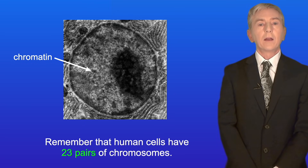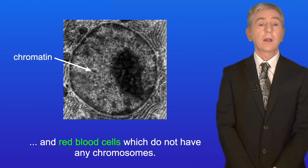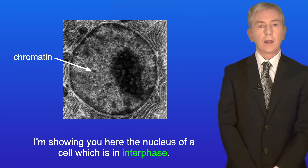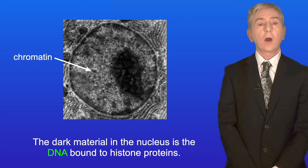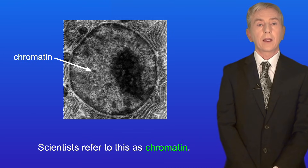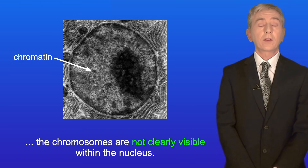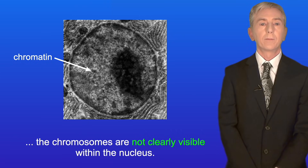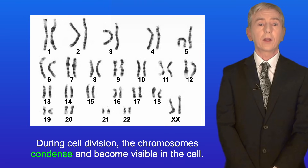Human cells have 23 pairs of chromosomes. The only exceptions are gametes which have 23 unpaired chromosomes, and red blood cells which do not have any chromosomes. I'm showing you here the nucleus of a cell which is in interphase — in other words the cell is in between cell divisions. The dark material in the nucleus is the DNA bound to histone proteins, which scientists refer to as chromatin. During interphase the chromosomes are not clearly visible within the nucleus, but during cell division the chromosomes condense and become visible.